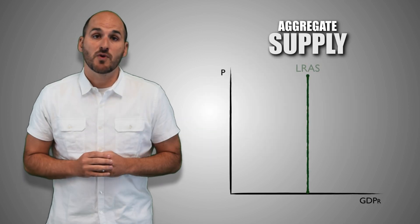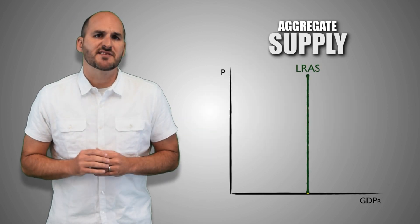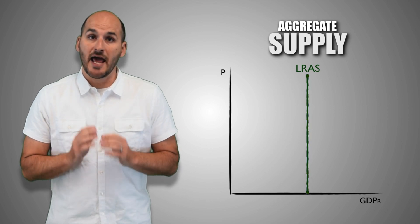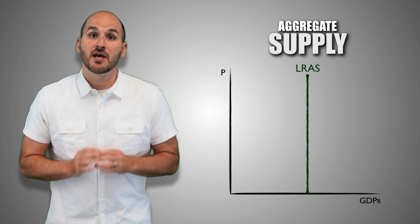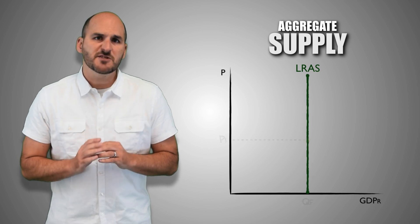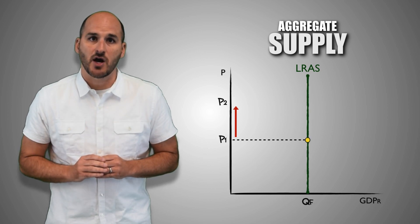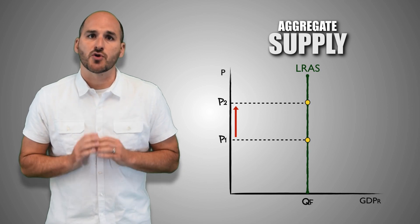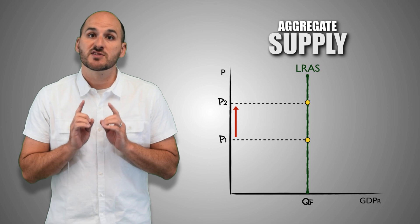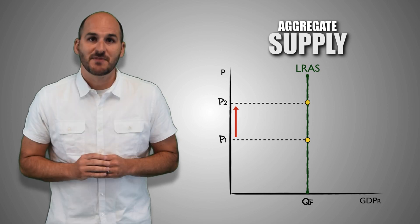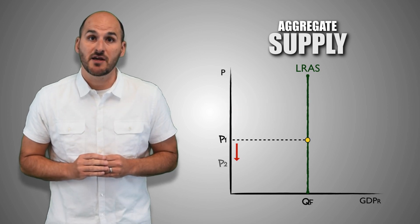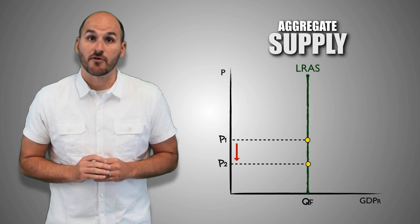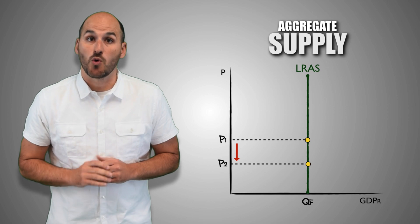This is the long-run aggregate supply curve. Notice that it is a perfectly vertical curve, implying that the relationship between aggregate price level and aggregate real GDP output supplied is constant. This means that as prices increase due to inflation in the aggregate economy, firms across the economy are not willing or able to produce a greater quantity of real GDP output, and therefore supply the same quantity. As prices fall due to deflation, firms are not willing or able to produce a lesser quantity, and therefore supply the same quantity.